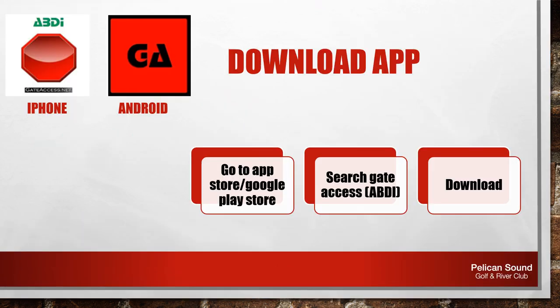If you don't already have the app downloaded, please go to your app store or your Google Play store, depending on the type of device that you have. In the search bar, type gate access. Once you find the app, it'll look like the above icon. Hit download. Once downloaded, open the app.